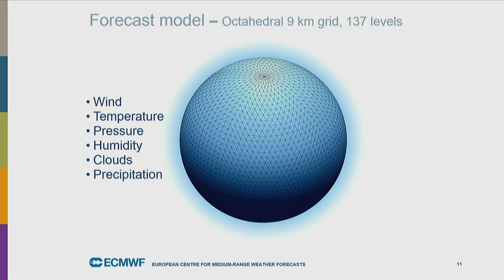The model we use is a spectral model, the Integrated Forecast System or IFS, designed in the 1990s. In a spectral model you also need a grid representation, and every time step you switch between spectral space and grid point space. One of the more recent innovations is the development of the so-called octahedral grid, a very special grid that makes as efficient use as possible of the grid point information given a certain spectral truncation. The highest resolution in our forecast system is 9 kilometers horizontally and 137 levels in the vertical, computing wind, temperature, pressure, humidity, clouds, and precipitation at all grid points.